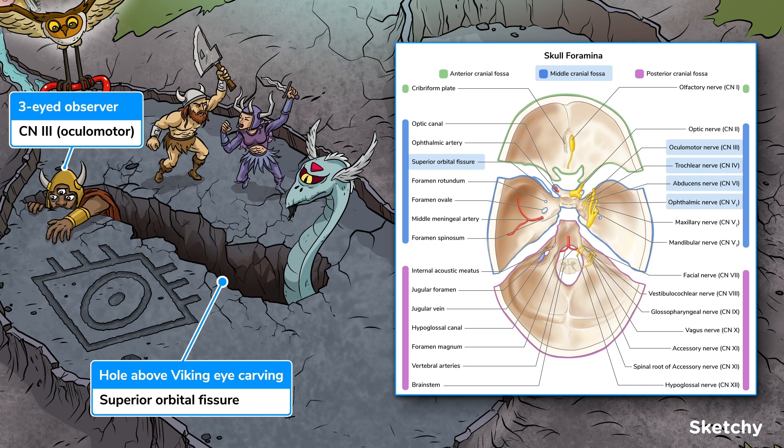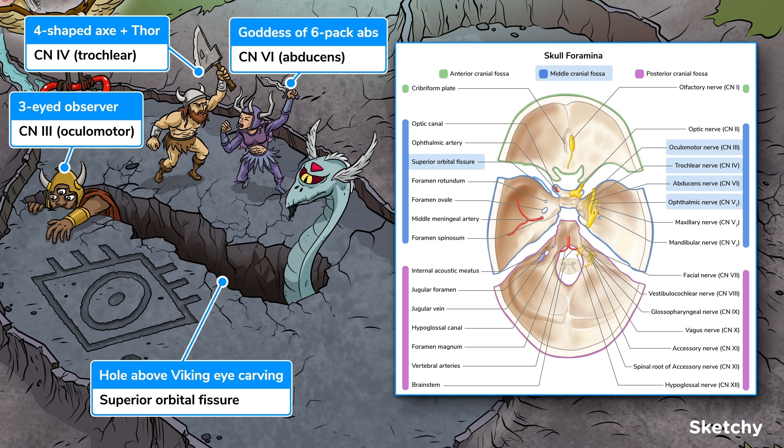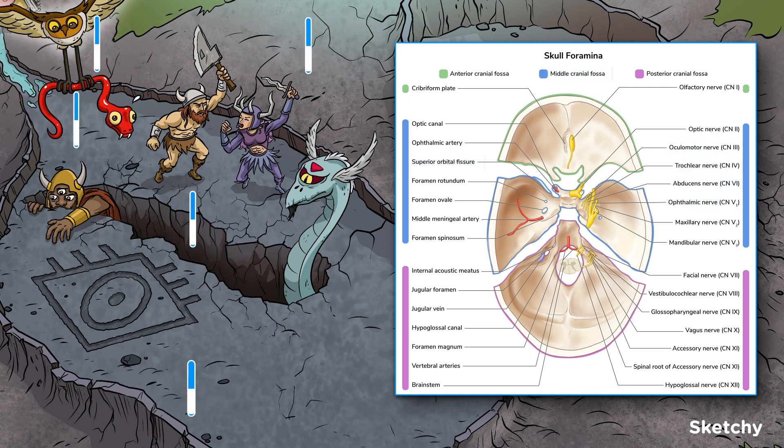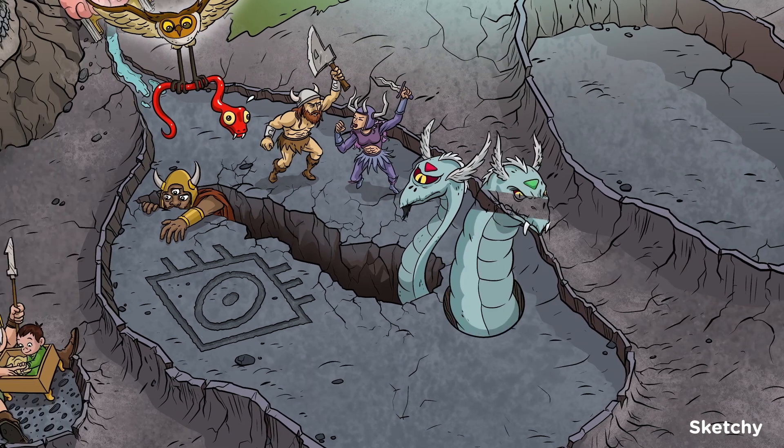We've got our three-eyed observer for cranial nerve 3, Thor for the trochlear, or fourth cranial nerve, and the goddess of six-pack abs, and death, for cranial nerve 6. Also, here's the one-eyed head of our trigem serpent to remind you of the ophthalmic branch of V1. Okay, so let's move away before that one eye catches me off guard.